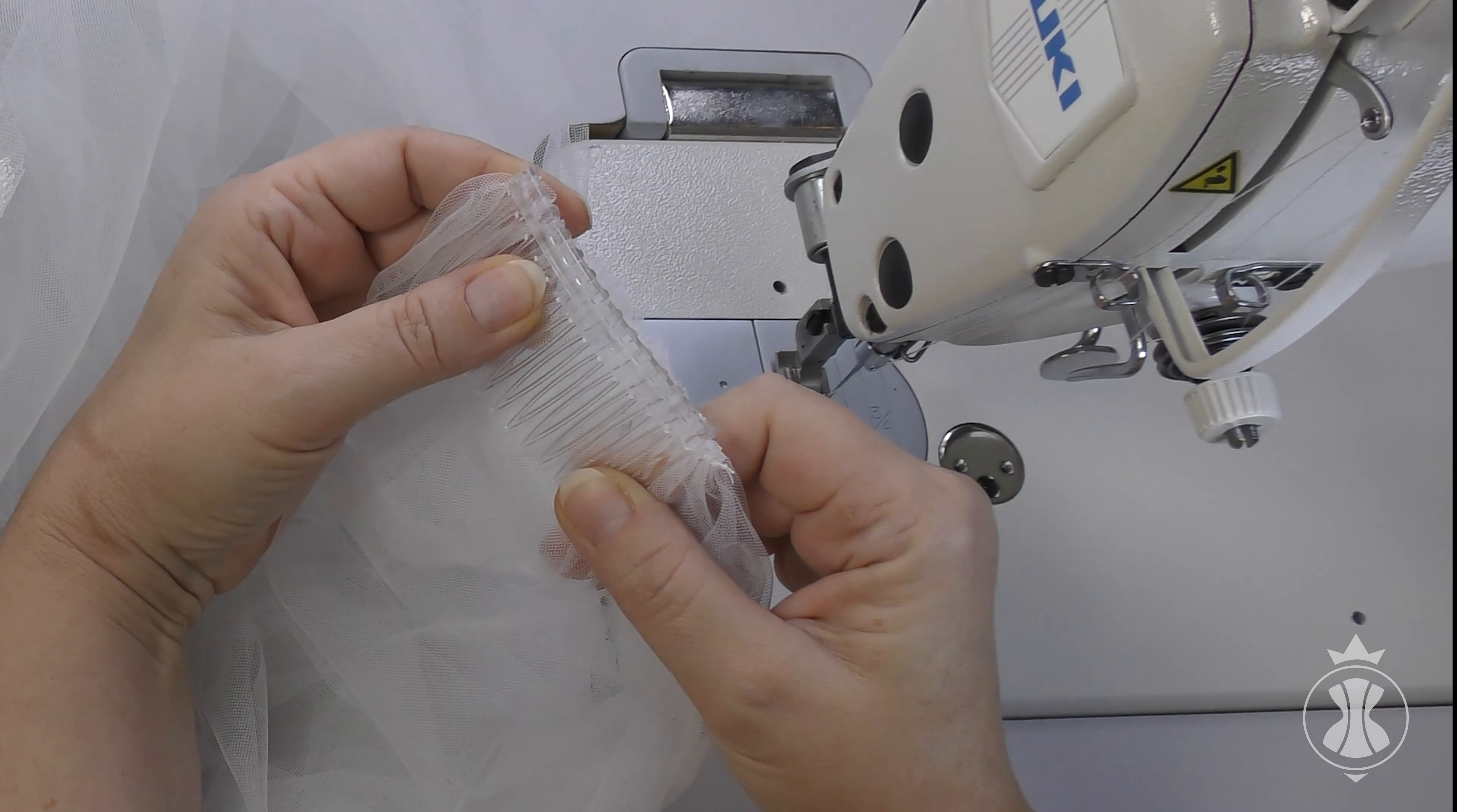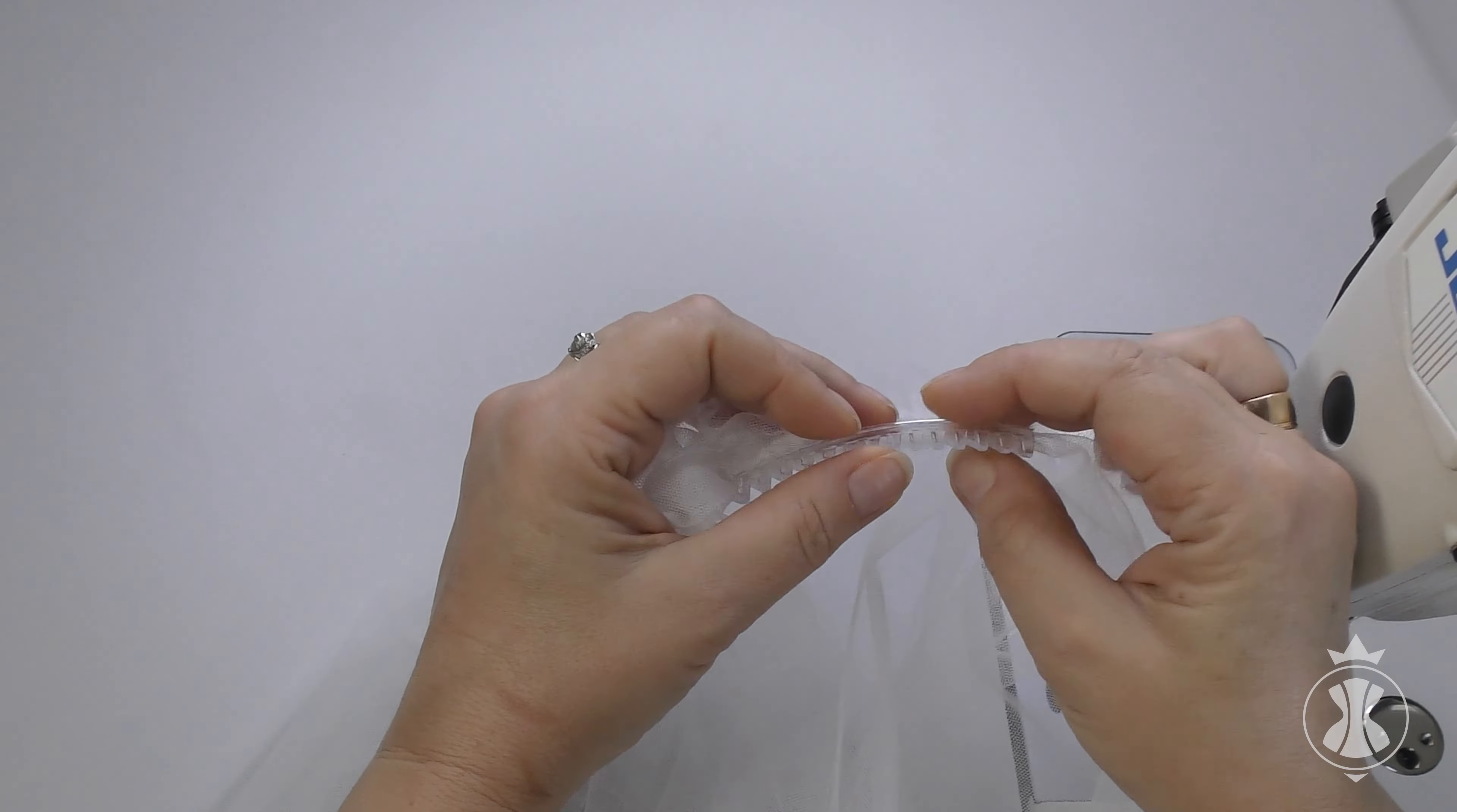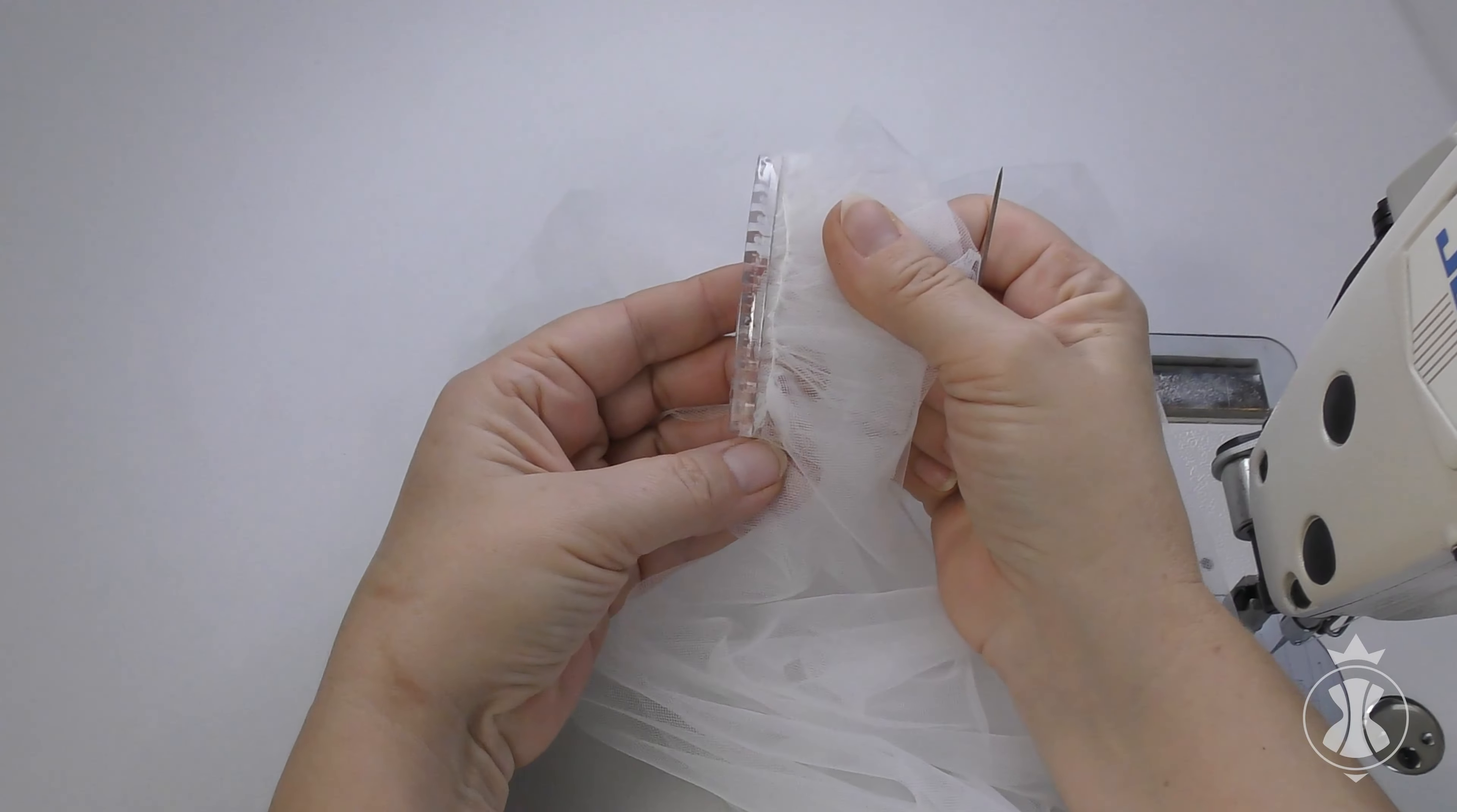Now it's time to sew on the comb. It should be positioned on the side of the long layer, as this is how the veil will be attached to the hairstyle. I want to mention that there are various types of attachments for veils. In my case, it's a comb with a special slot where I should insert the edge of the gathering, and then sew the comb on with hand stitches.